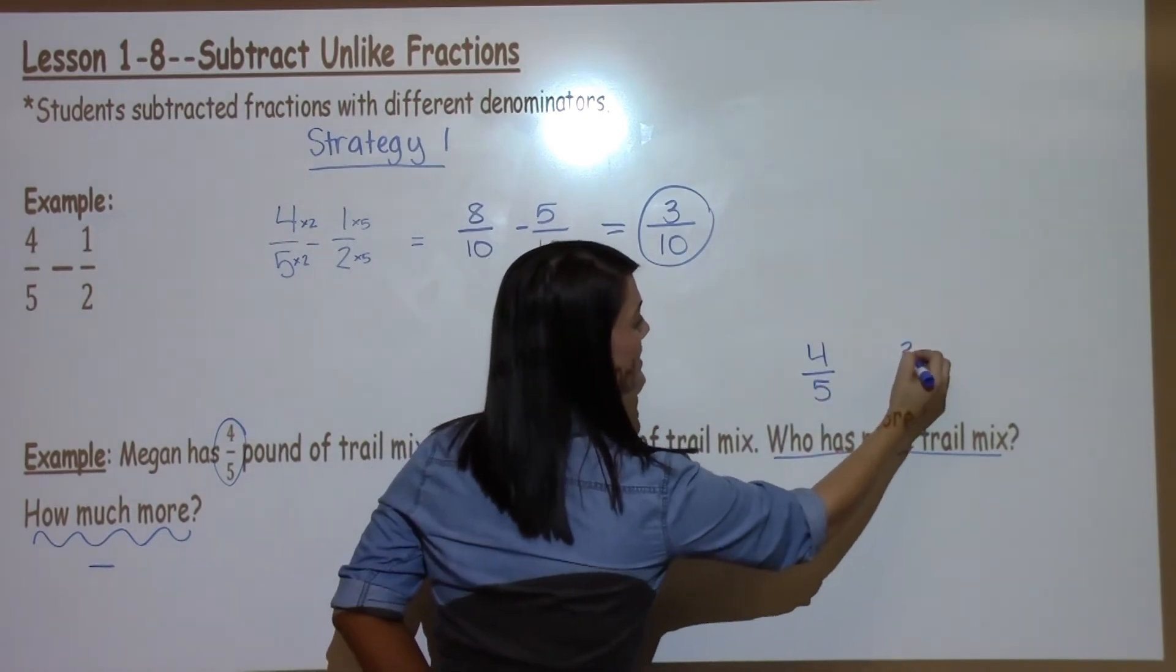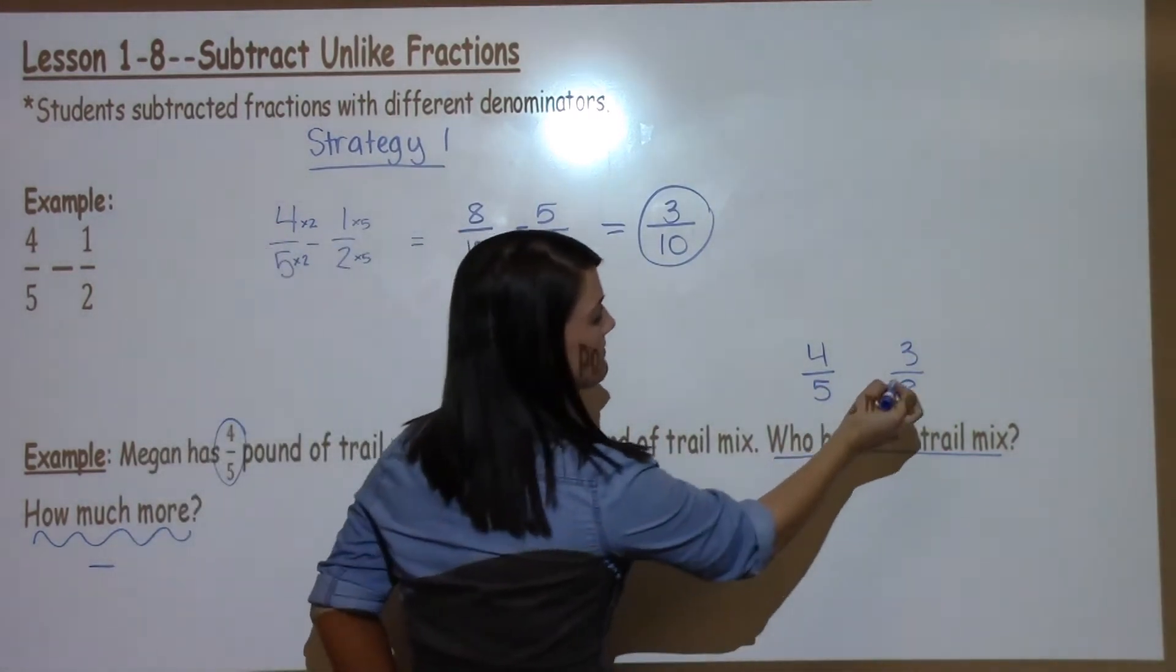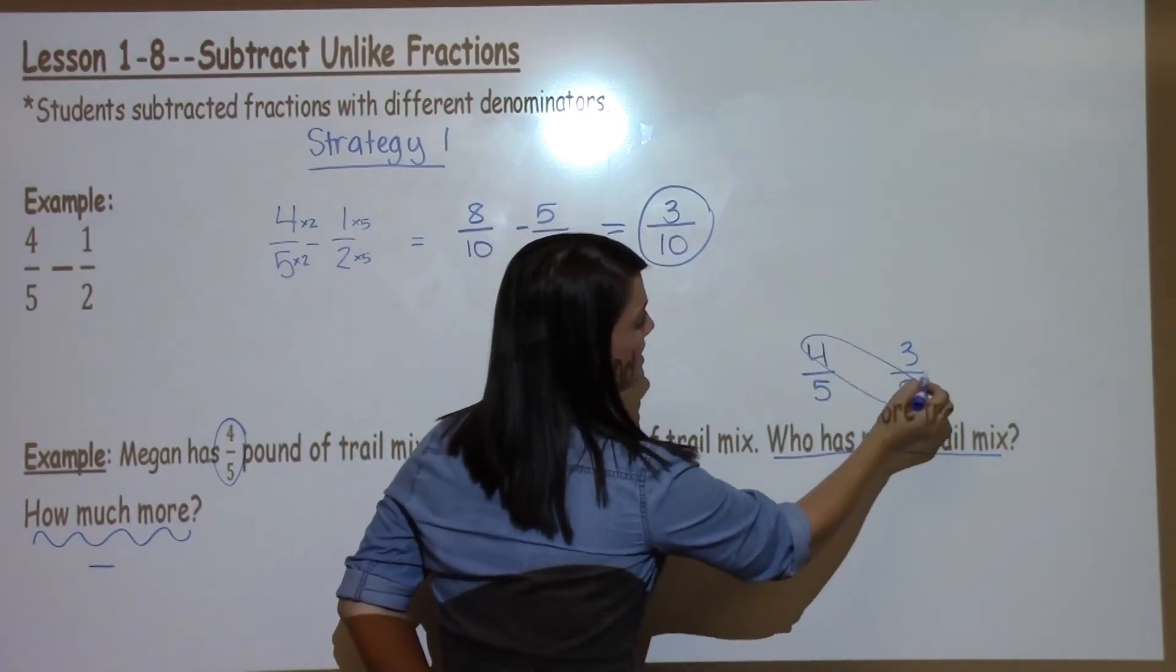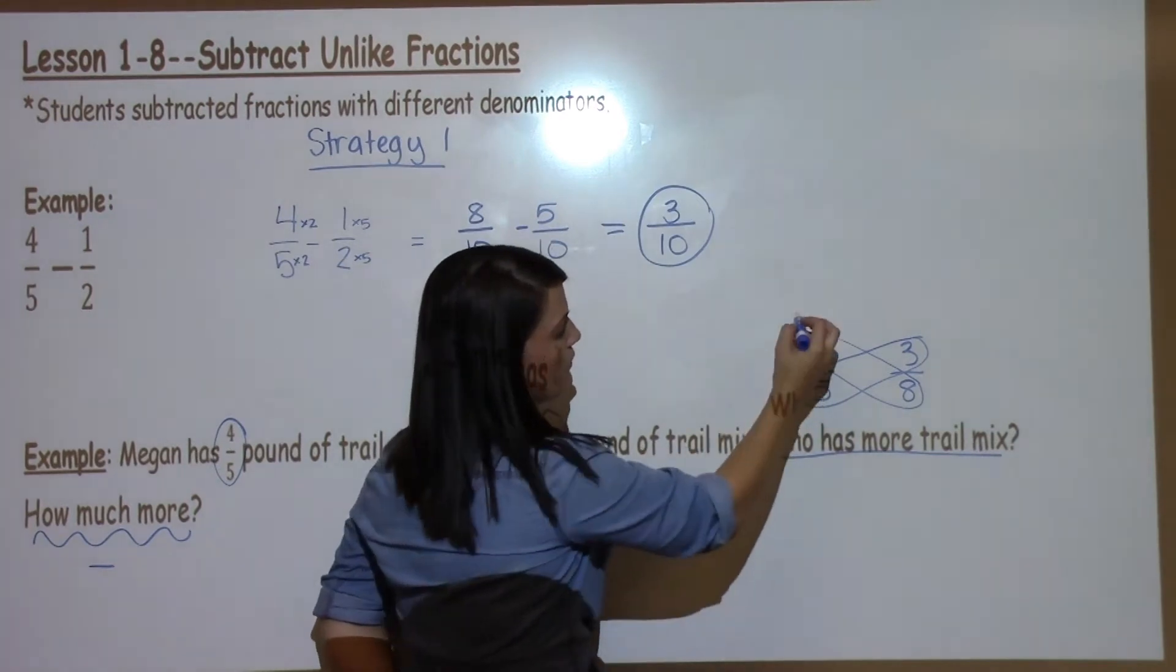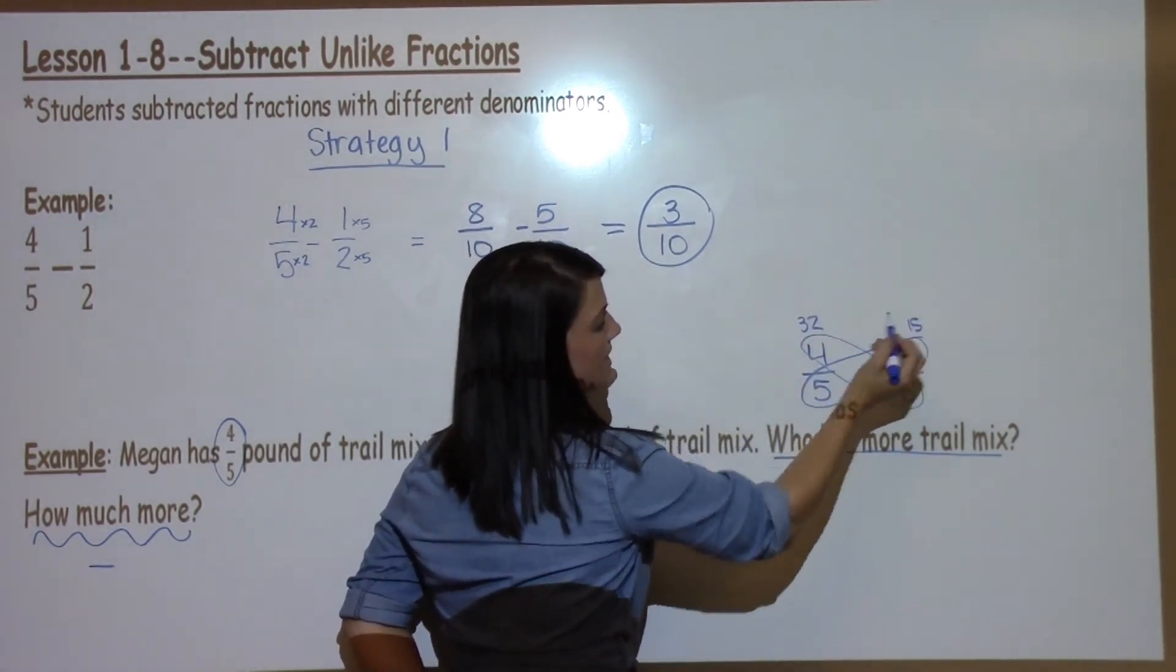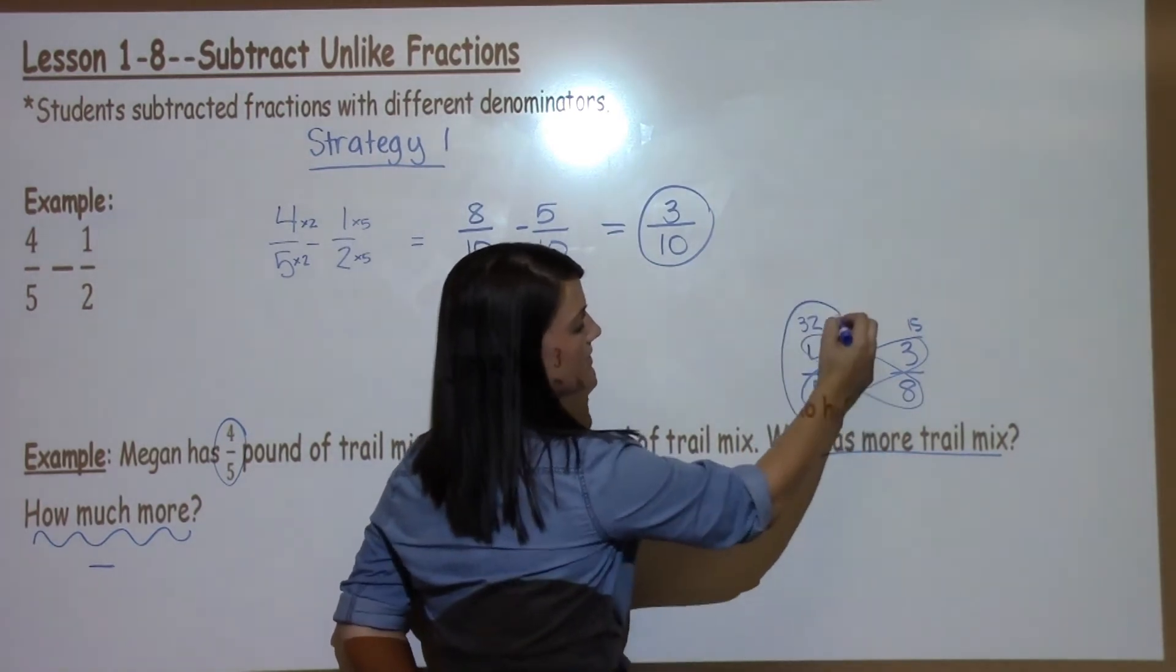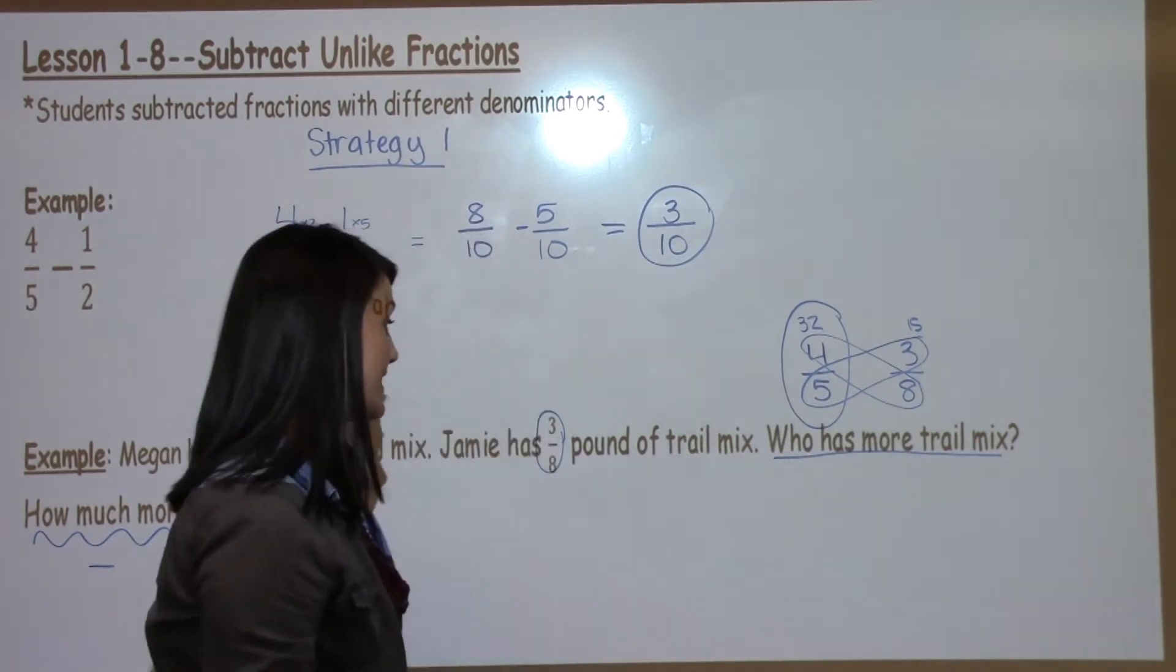4 fifths and 3 eighths are the two fractions that we have. To find out who has more I just draw wings around the diagonal numbers. 4 times 8 is 32, 5 times 3 is 15. 32 is bigger than 15 which means 4 fifths is the larger fraction.